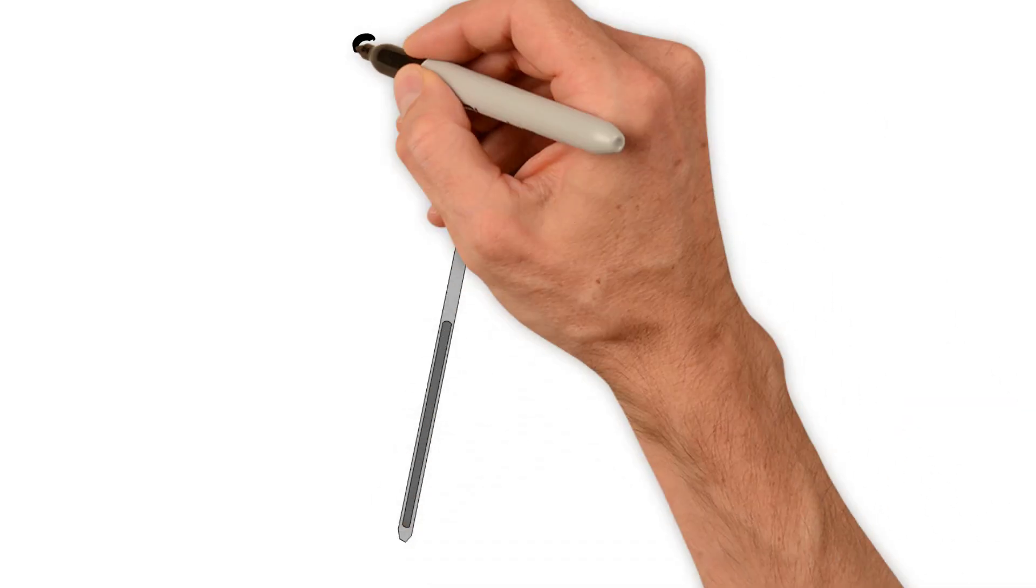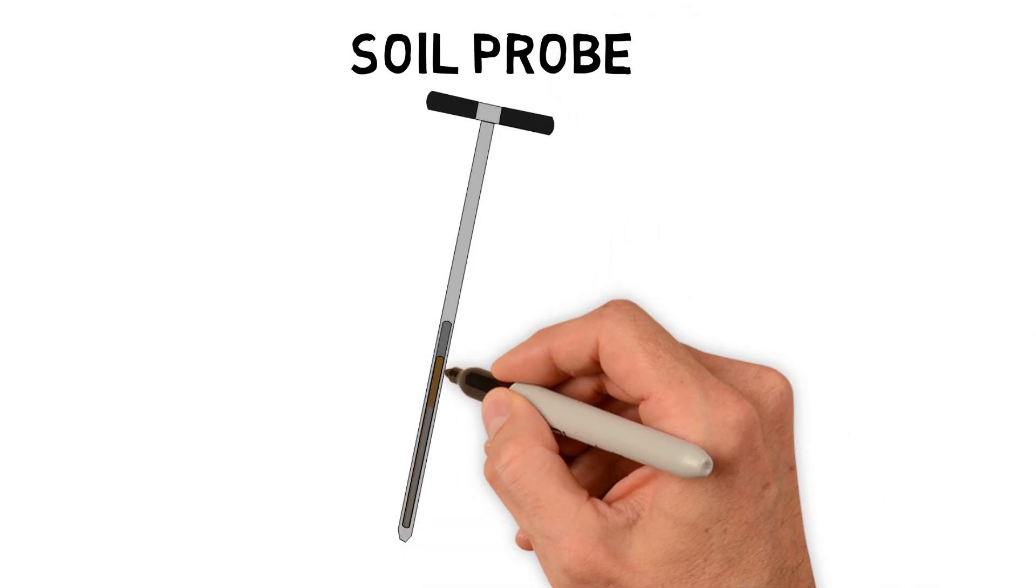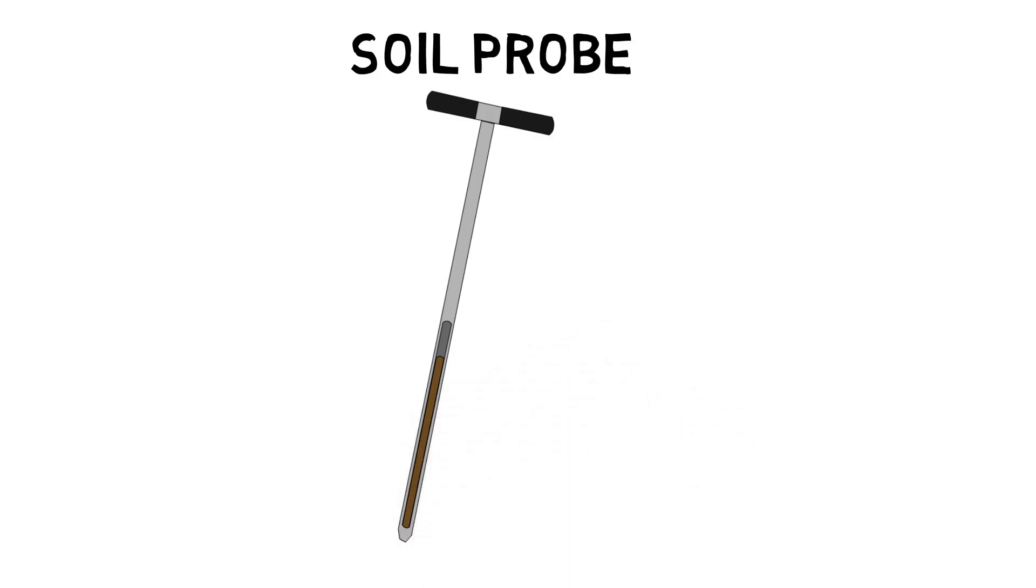To sample soil, use what's called a soil probe, which is basically a pole with a hole at the end and a bucket for the soil to go into. The hole at the end is sharpened, and as you push the probe into the soil, the soil will enter the bucket and be held there.